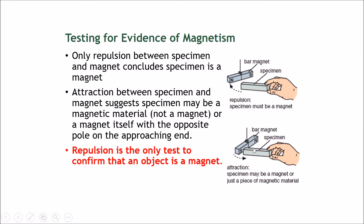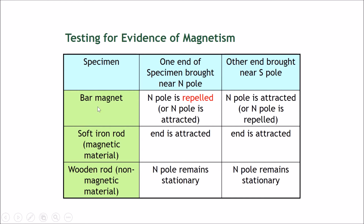To summarize: if it was a bar magnet, it could be repelled or attracted — both reactions are possible when both poles are tested. However, if it was a soft iron rod that was not magnetized but is a magnetic material, it would attract both ends, proving it's a magnetic material not yet magnetized — attracted to both the north and south pole. The last case is a wooden rod, which would cause each pole to remain stationary with no effect.